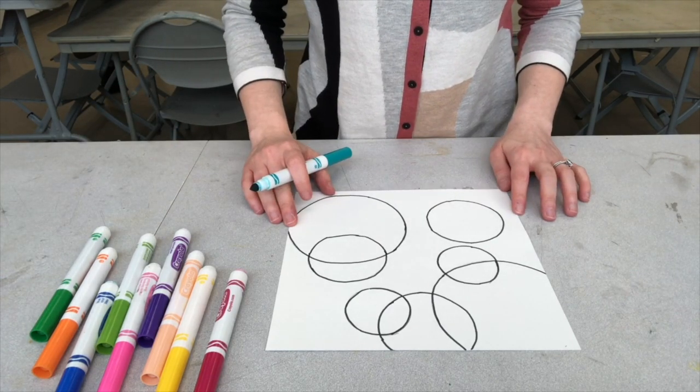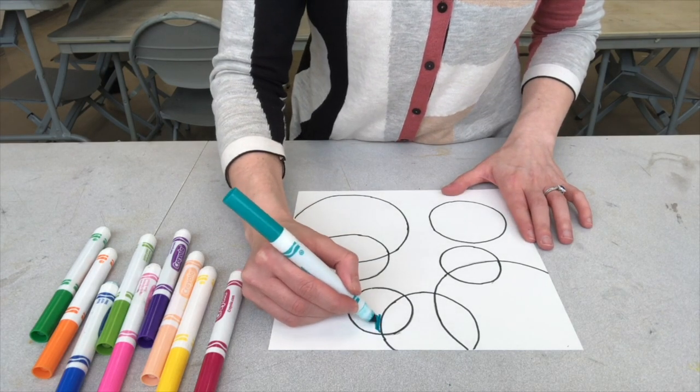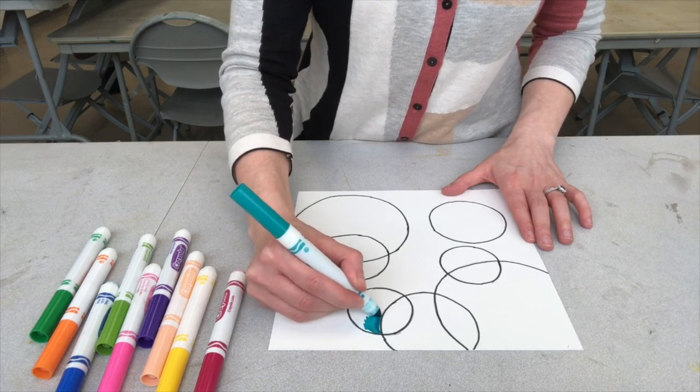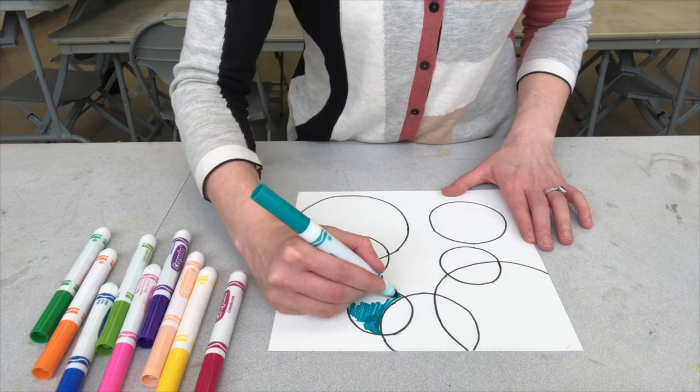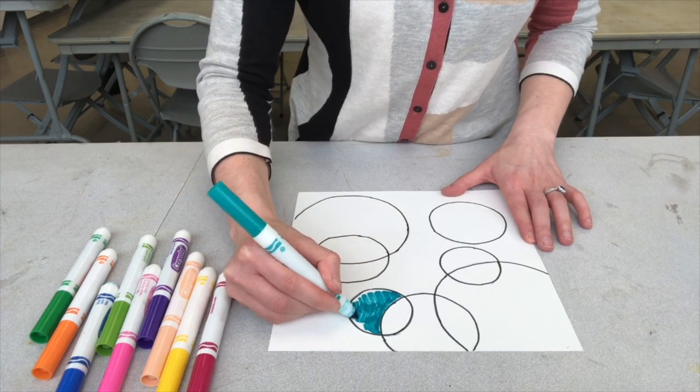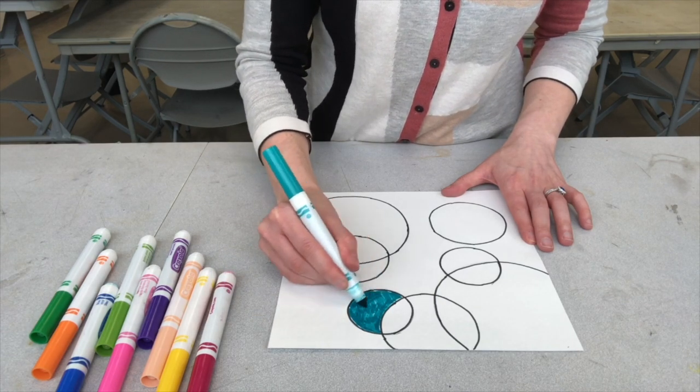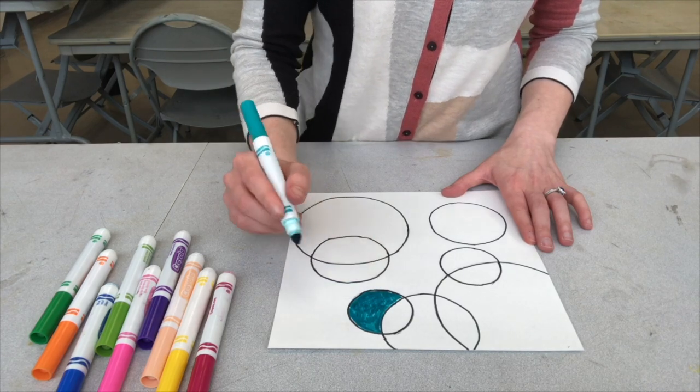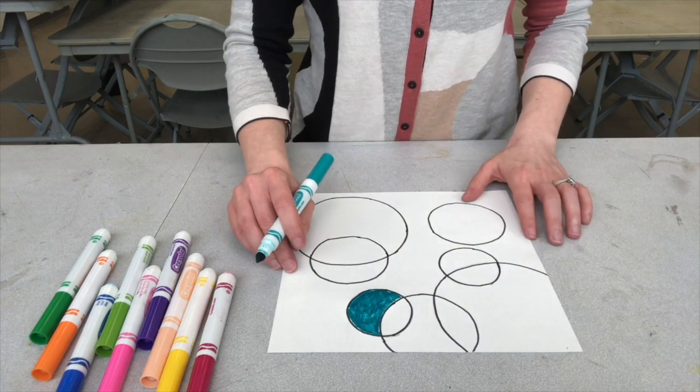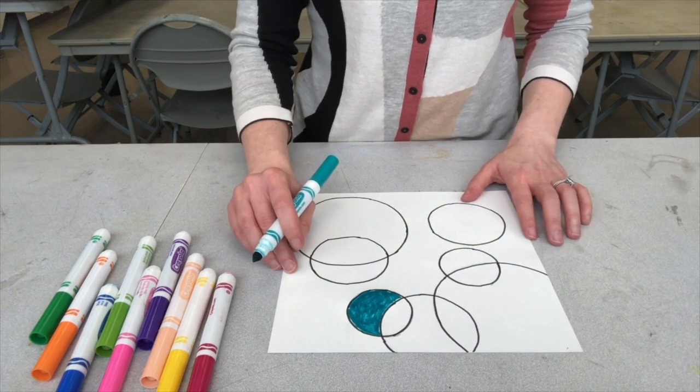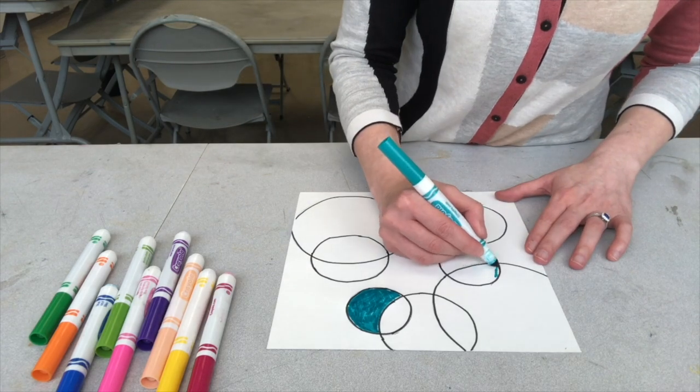Now, since my circles overlap, you want to make sure that you only color in one section of the circle. So for example, I'm coloring in here, within the black outline, this teal color. Okay, now I do not want to color in this section of the circle the same color. So I don't want my colors to touch across the black lines. So I'm going to do another circle in teal. I'm going to do this one over here in teal.